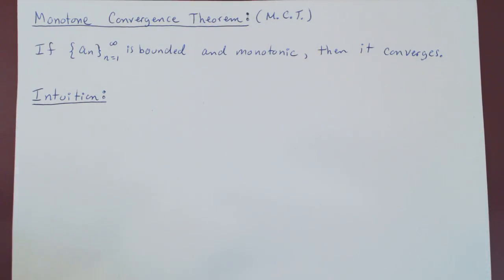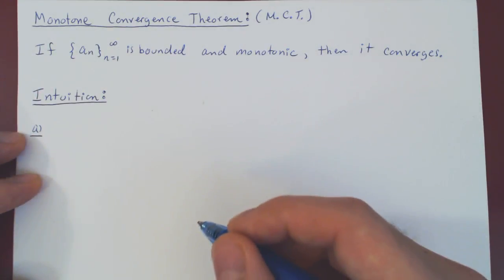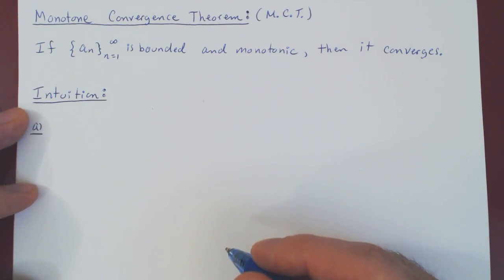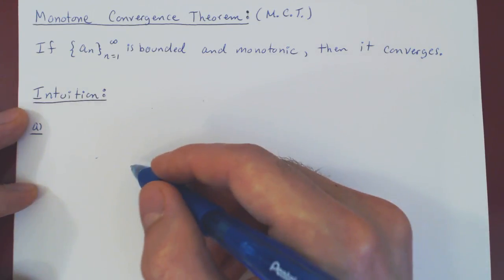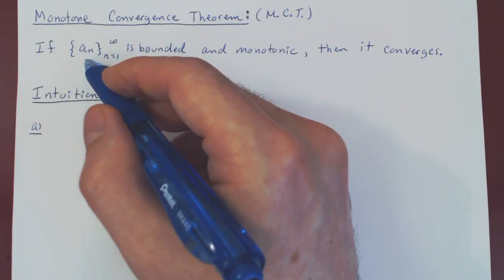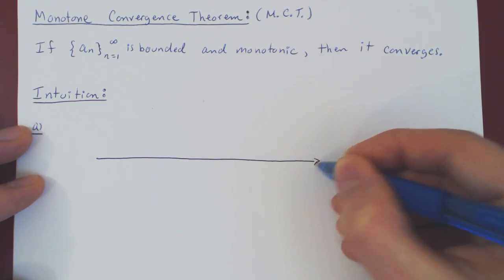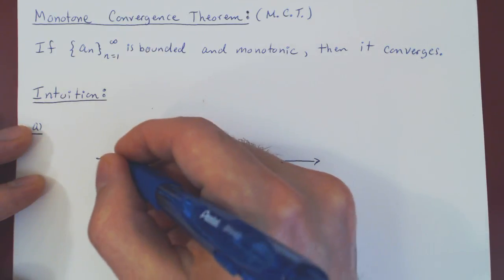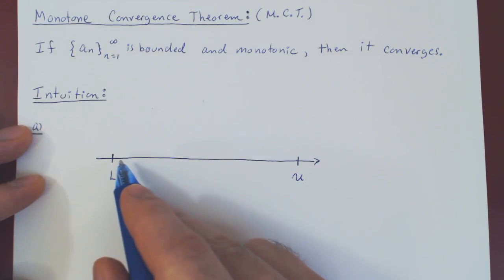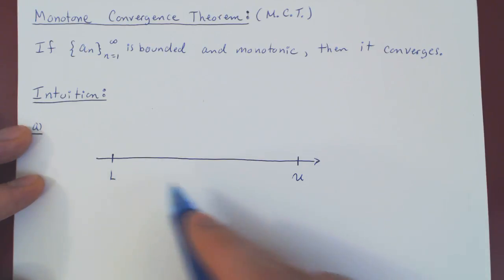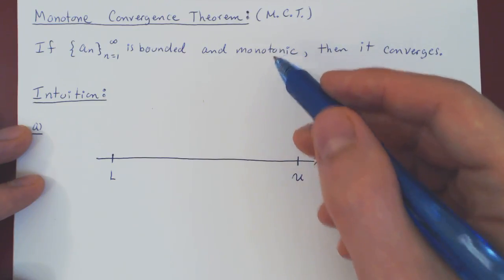I'll give you two ways to look at it — first, thinking of the sequence as a list of real numbers along the real axis, and then we'll look at the same reasoning by viewing the sequence as a function on the positive integers. So the sequence is bounded — that's the first assumption — so it must lie between two values for every n: the lower and the upper bound. Every term of our sequence must lie between these two fixed real values. We'll assume the sequence is monotonically increasing, so the terms are getting larger.